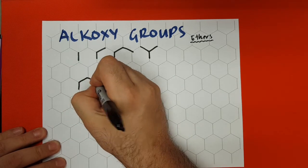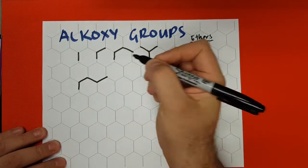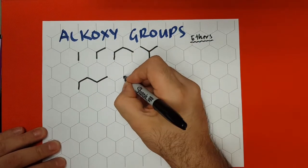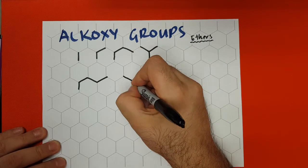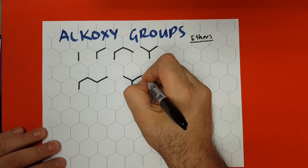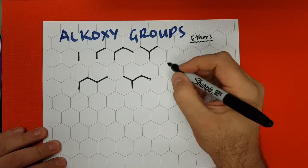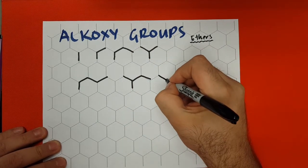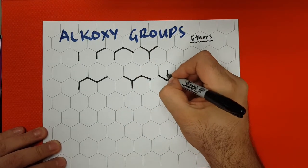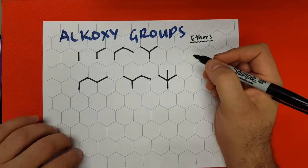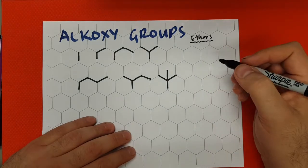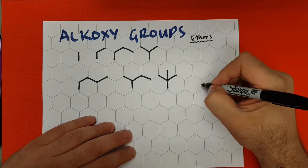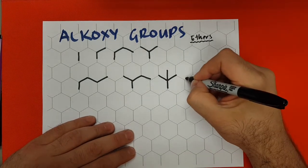So we have n-butyl, we're going to have sec-butyl, we're going to have tert-butyl, and we're going to have isobutyl.